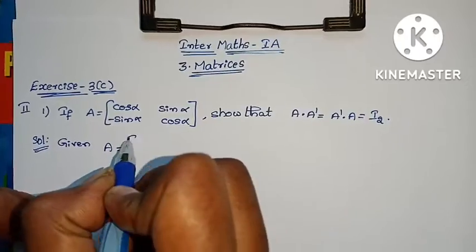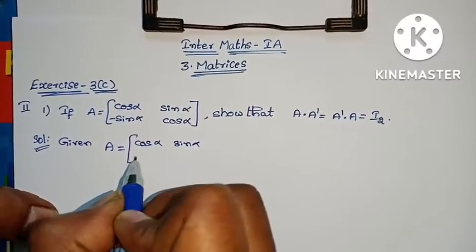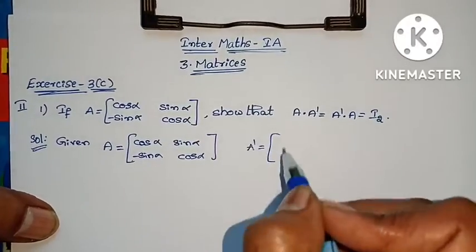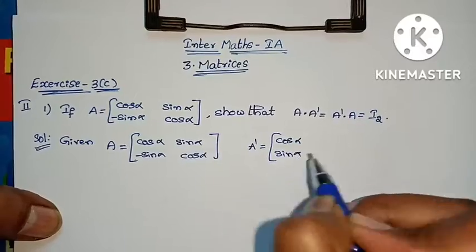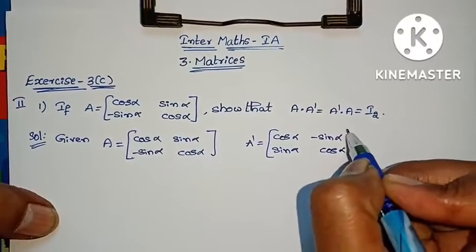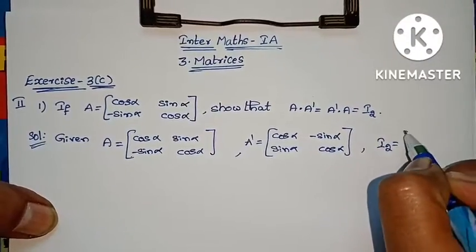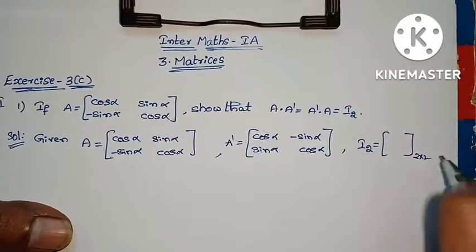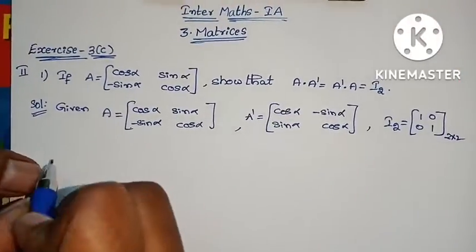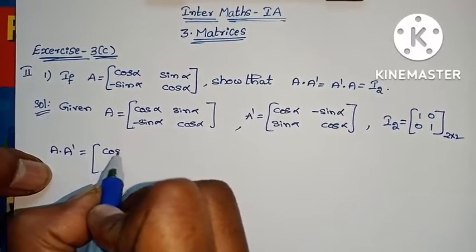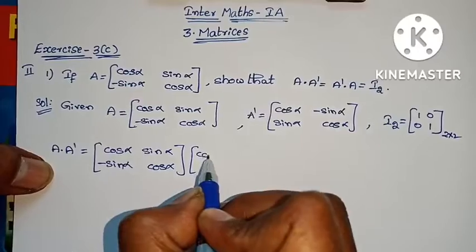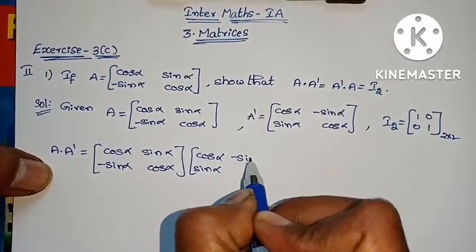A equals to [cos α, sin α; -sin α, cos α]. Now we find A transpose. First row, first column: cos α, sin α. Second row: -sin α, cos α. So A into A transpose equals [cos α, sin α; -sin α, cos α] into [cos α, -sin α; sin α, cos α].